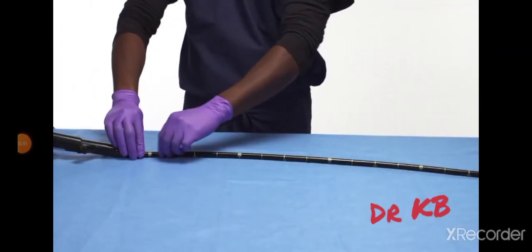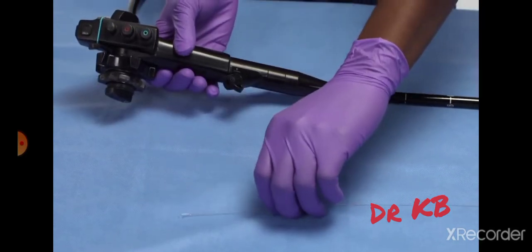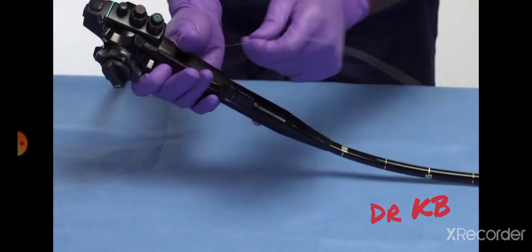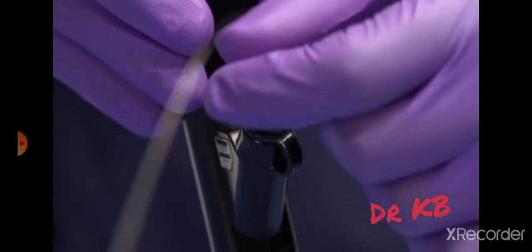Be sure to straighten the endoscope. Feed the tripwire through the biopsy valve and then through the working channel of the endoscope until the wire loop exits the distal end of the endoscope.